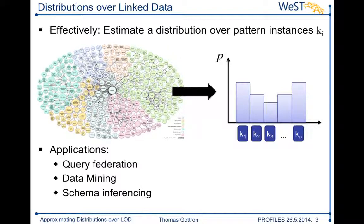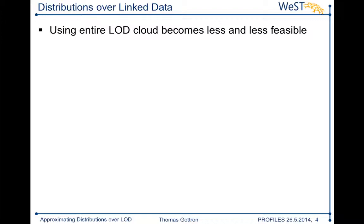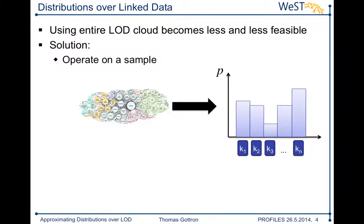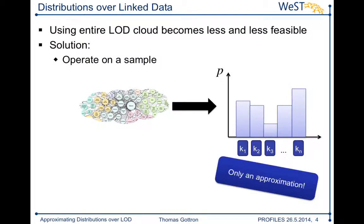The linked data cloud is growing and growing, so it is becoming less and less feasible to use the entire linked data cloud for such a process. A solution could be to just operate on a sample — take a fragment of the linked data cloud and estimate the distributions on that fragment. This will very likely just be an approximation of the true distribution, and the question is: how good are these approximations?